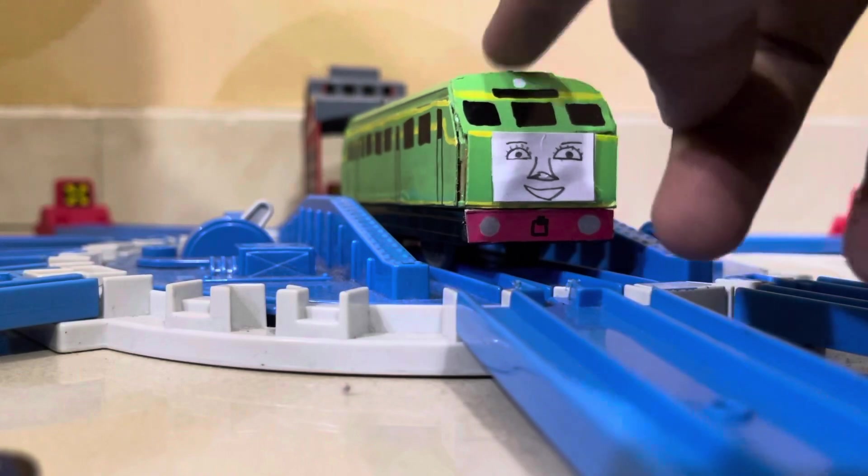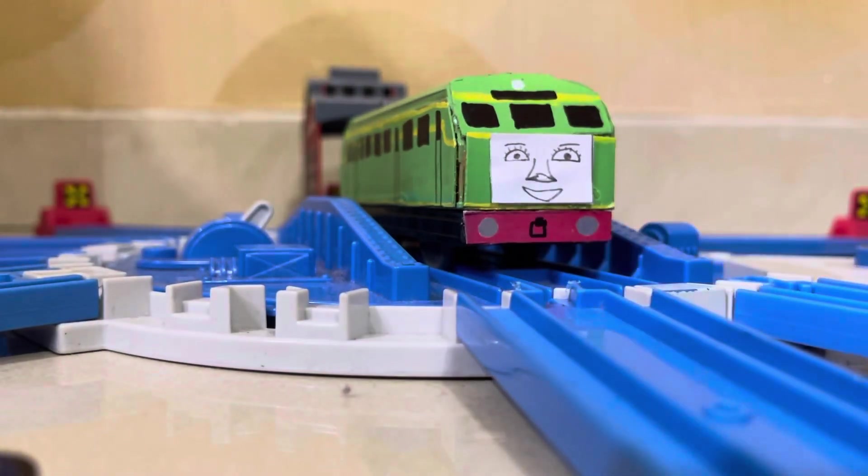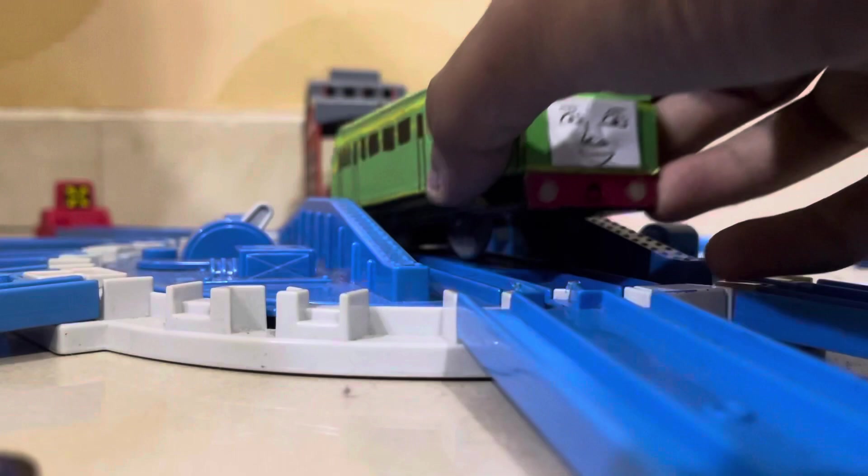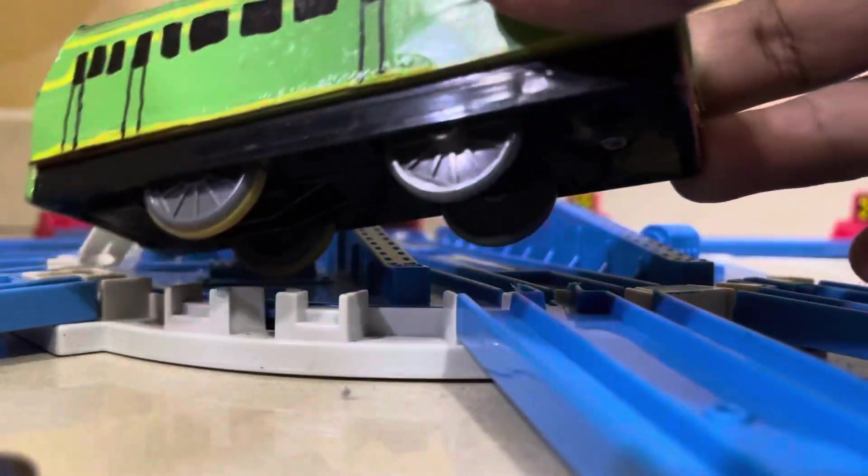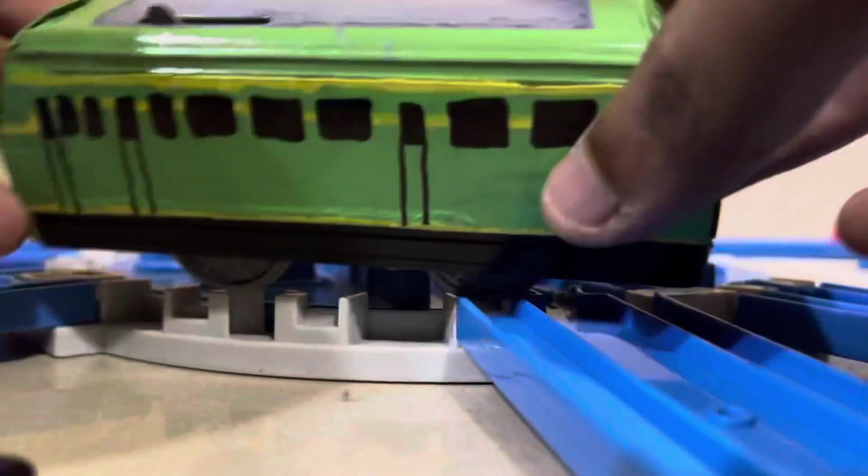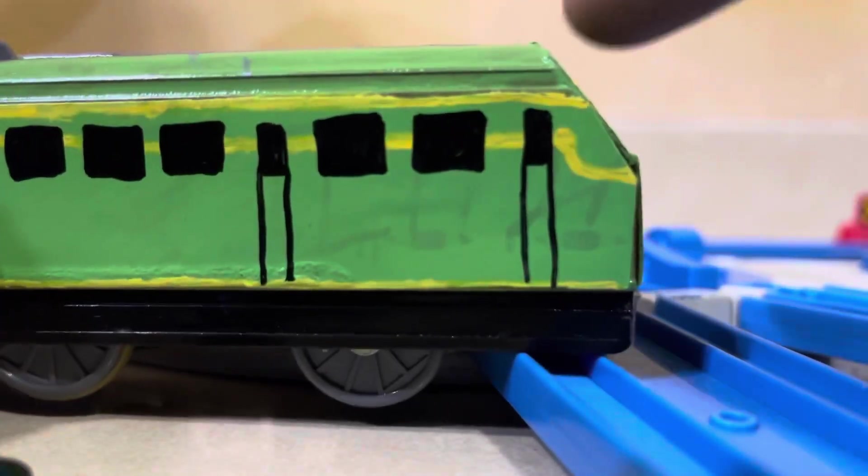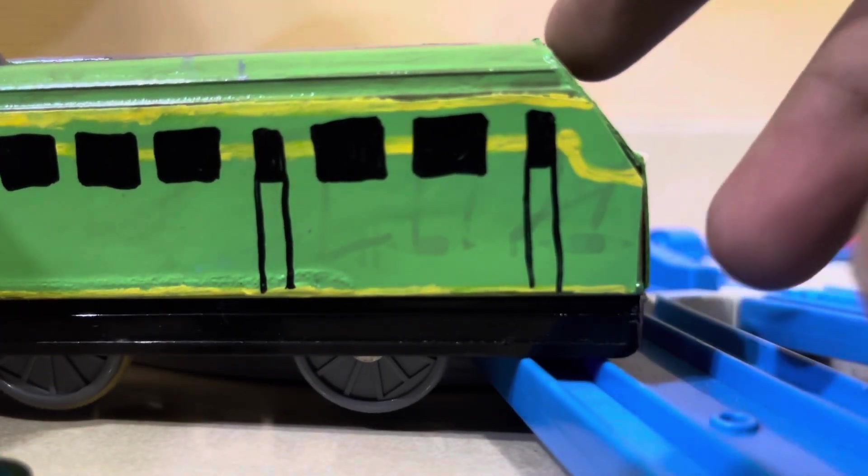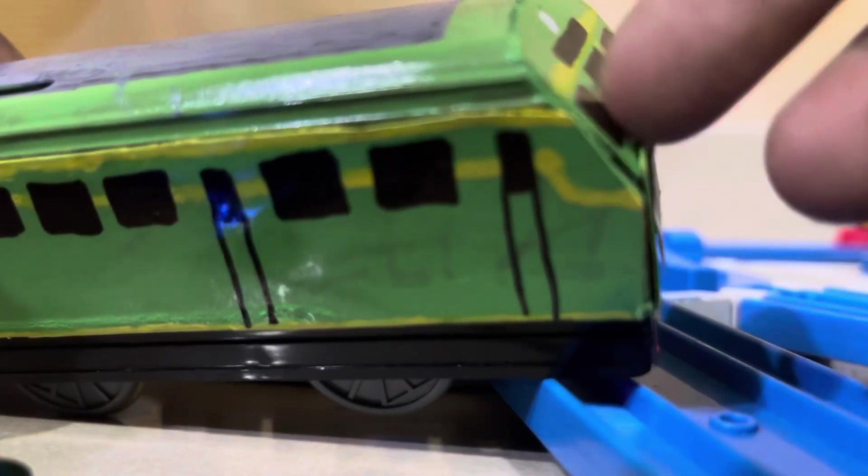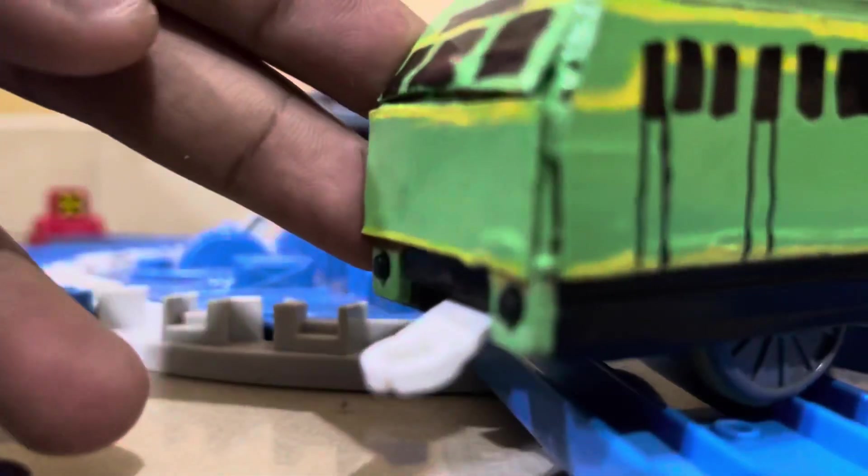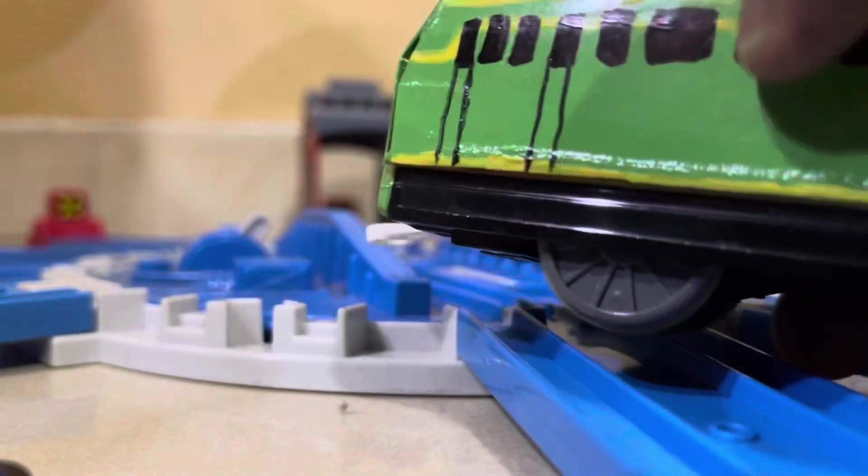As you can see, this model is actually made from a spare Harvey's coach, but with some modifications. I did modifications on the model like I cut up this part and filled it with cardboard, even the back, and then I covered the whole model with cardboard.